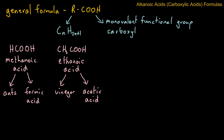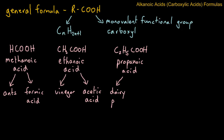The next one in the group has three carbon atoms, so C2H5COOH, and this is propanoic acid. This is found, for example, in dairy products, and it's responsible for the smell of a strong Swiss cheese. The old name is propionic acid.